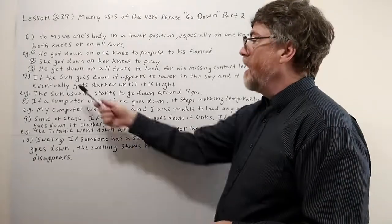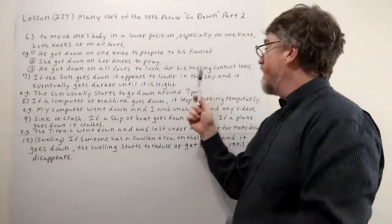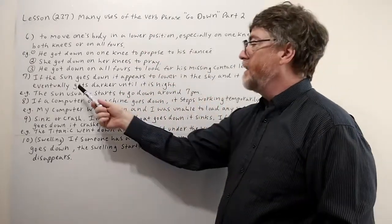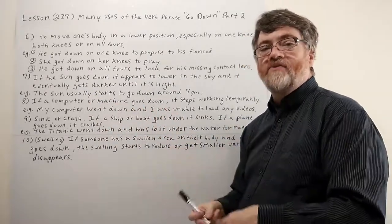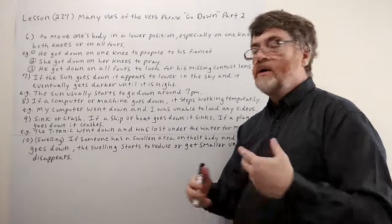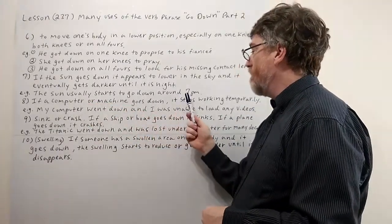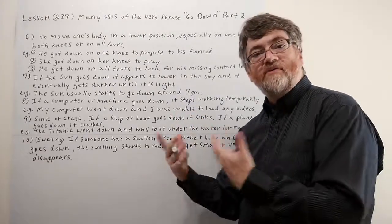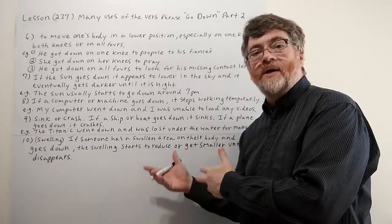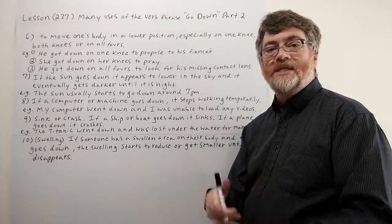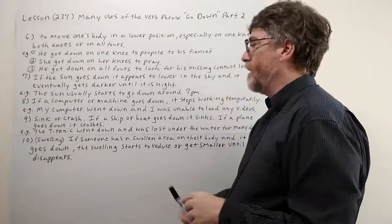Let's look at number seven. If the sun goes down, it appears to lower in the sky and it eventually gets darker until it is night. We often say the sun is going down. For example, the sun usually starts to go down around 7 p.m. Maybe if you traveled somewhere, you might ask someone what time does the sun go down here, in this location, especially if you flew somewhere with a different time zone.